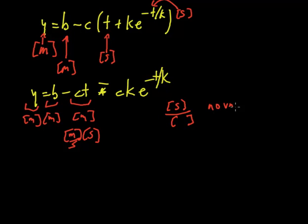And the only way to do that is if k has seconds. Let's see if this makes sense. If c has meters per second, k is in seconds, e to the something has no units, so the result has no units and the stuff inside it has no units.